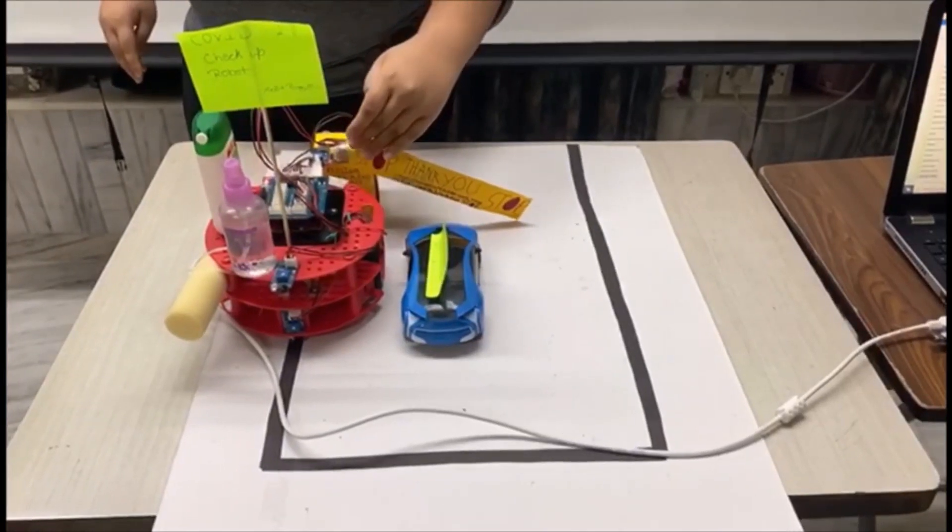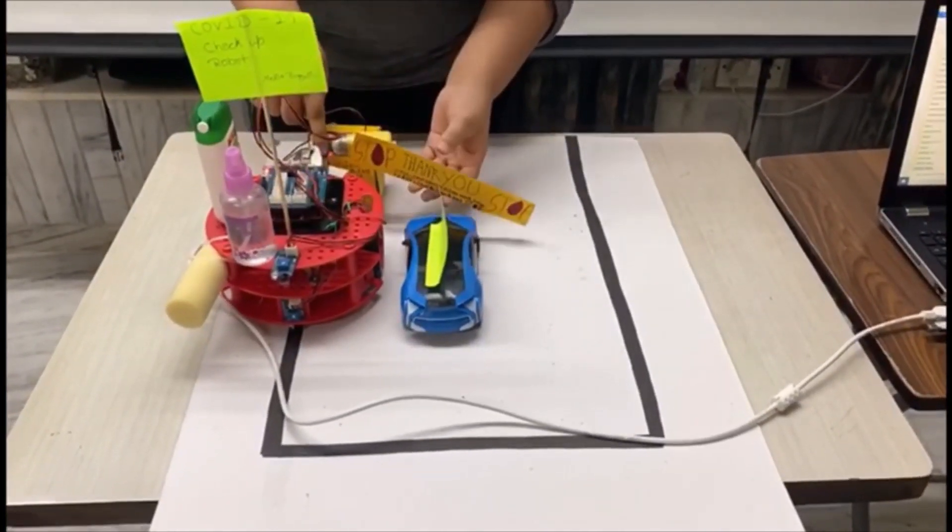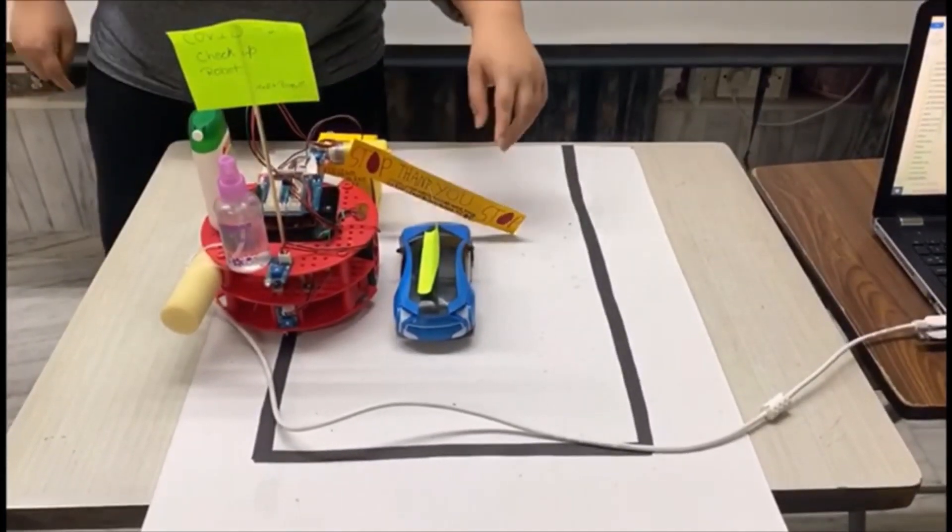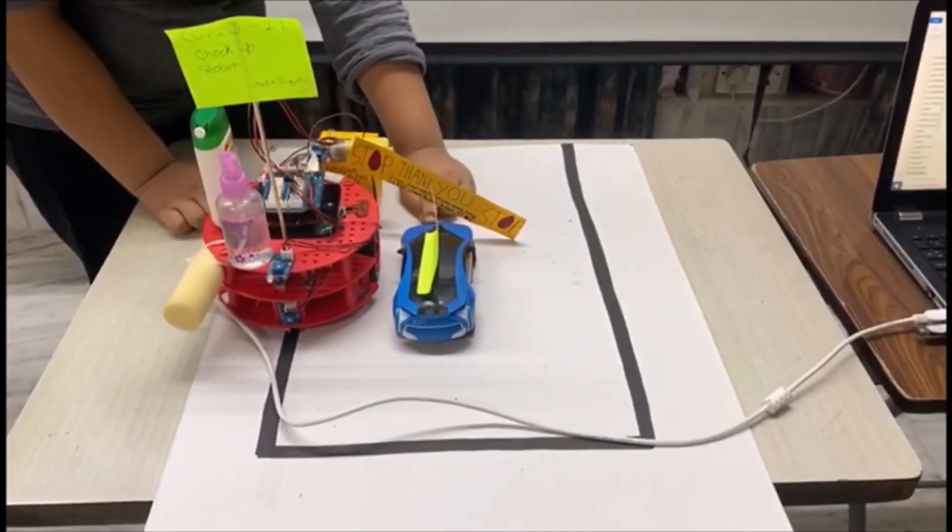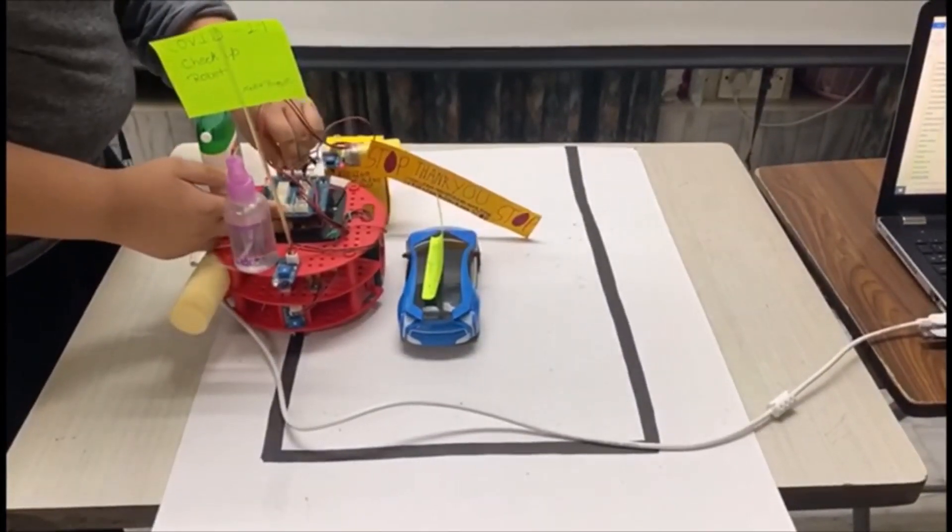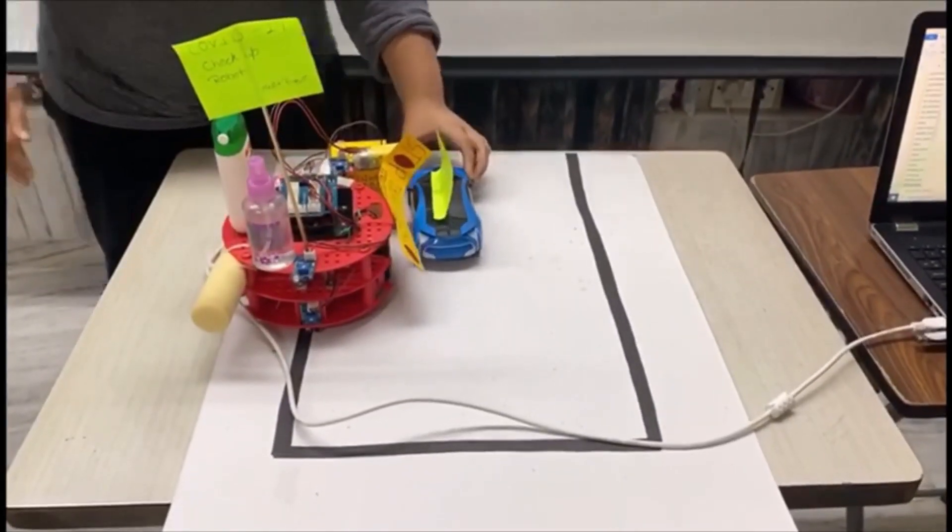Now the robot has come here and this IR sensor would sense the robot and it would open the barricade. This barricade is also for the people who test positive so that they cannot run away. Now it would sense the robot to open the barricade and the car would go.